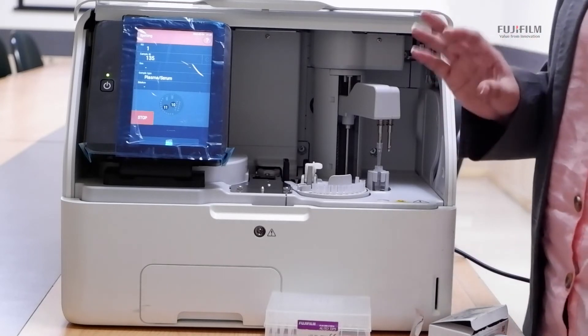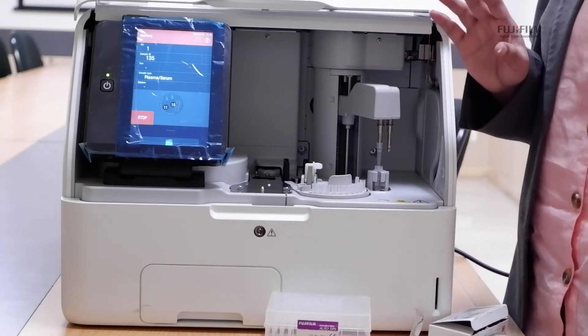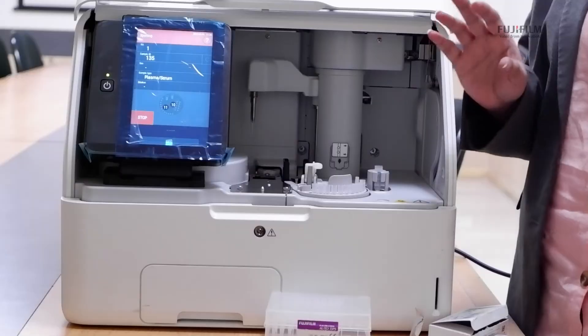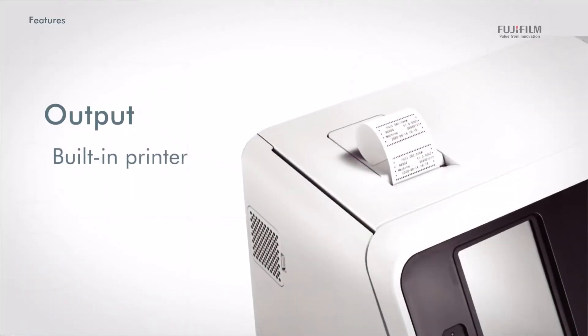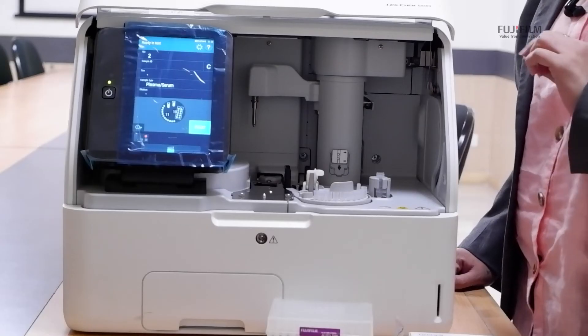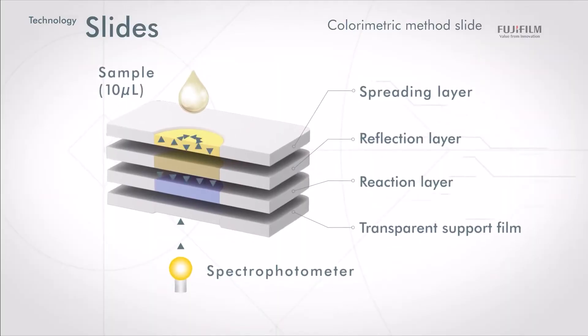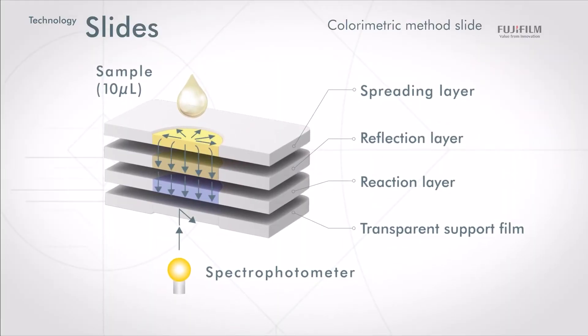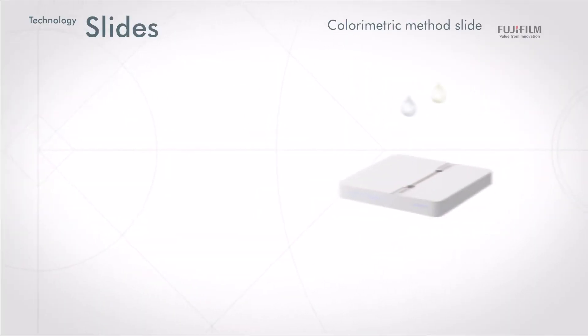Each and every sample will take around 90 seconds to 6 minutes time for the results to be printed out. This equipment takes sample volume of around 10 microlitres for all colorimetric slides and 50 microlitres for ISA.